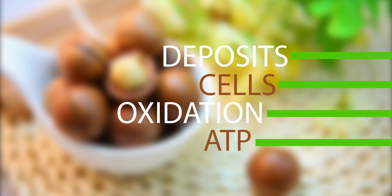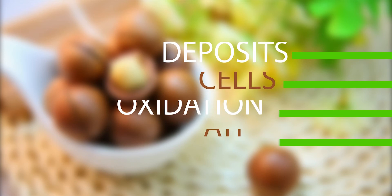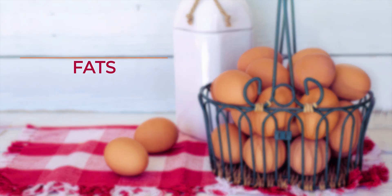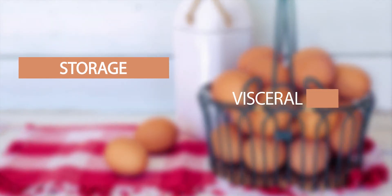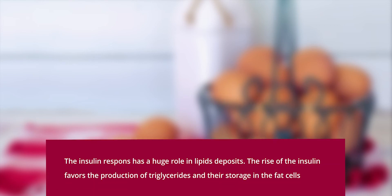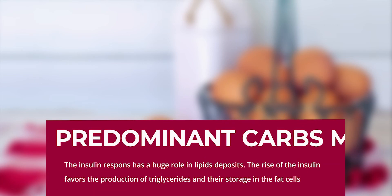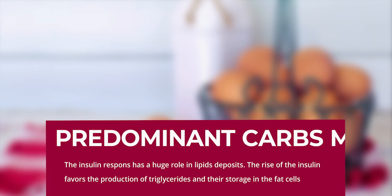To metabolize them as a source of energy they need to be extracted from the deposits and transferred to the cells where the oxidation takes place and the ATP is created. The fats can be stored at the visceral level — that's in between the organs — and at the subcutaneous level, in the adipocytes that create the adipose tissue. In case of ingestion of a predominant carbohydrate meal, the insulin response has a huge role in lipid deposits. The rise of insulin favors the production of triglycerides and their storage in the fat cells.